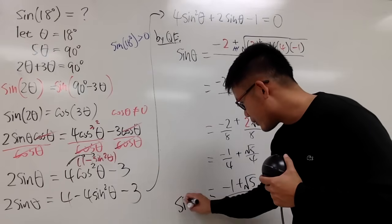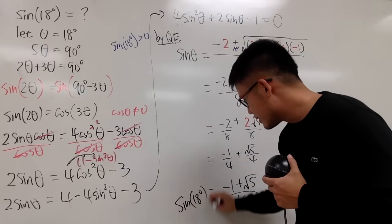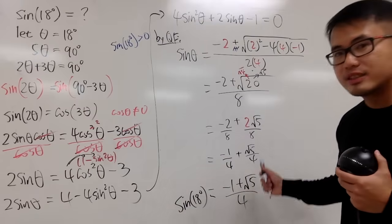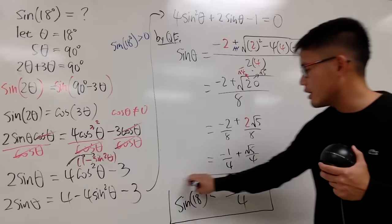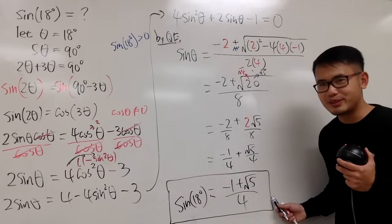Sine theta. Where theta is 18 degrees. We get negative 1 plus square root of 5, all over 4. This right here, is it.